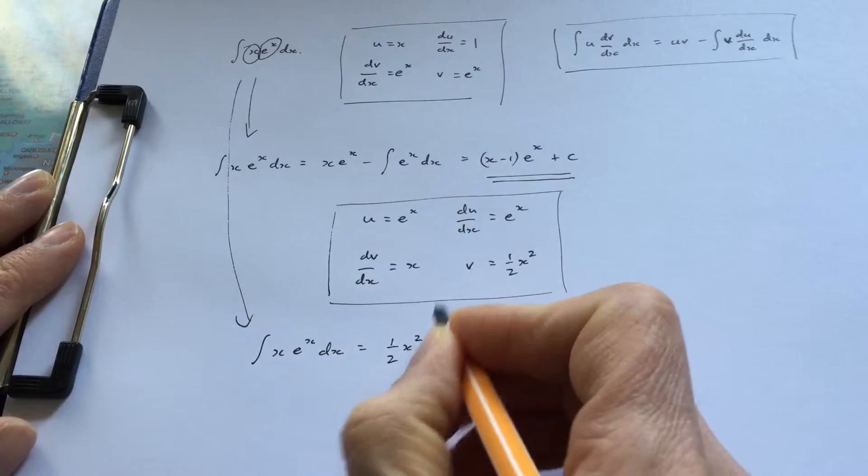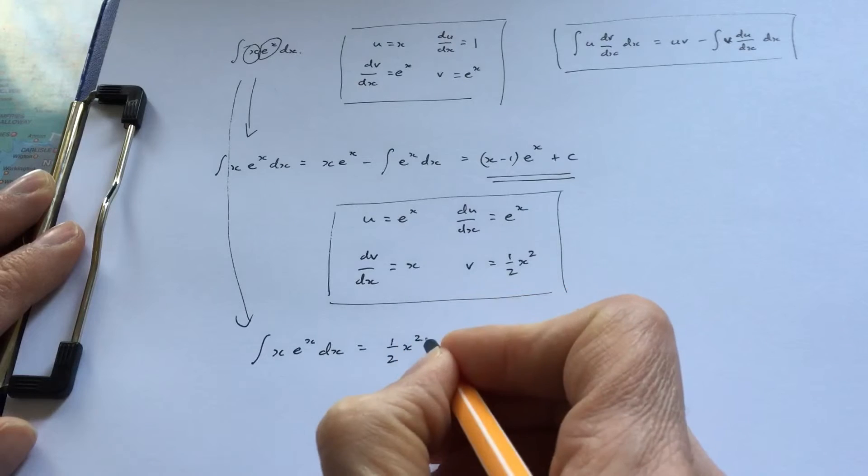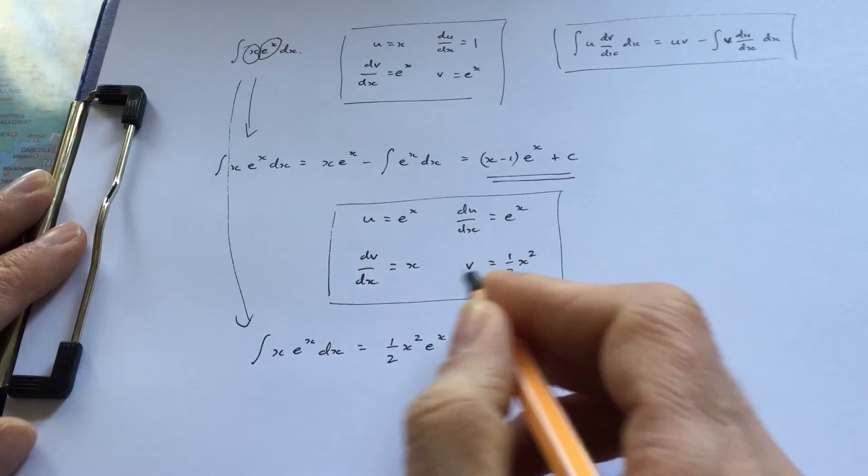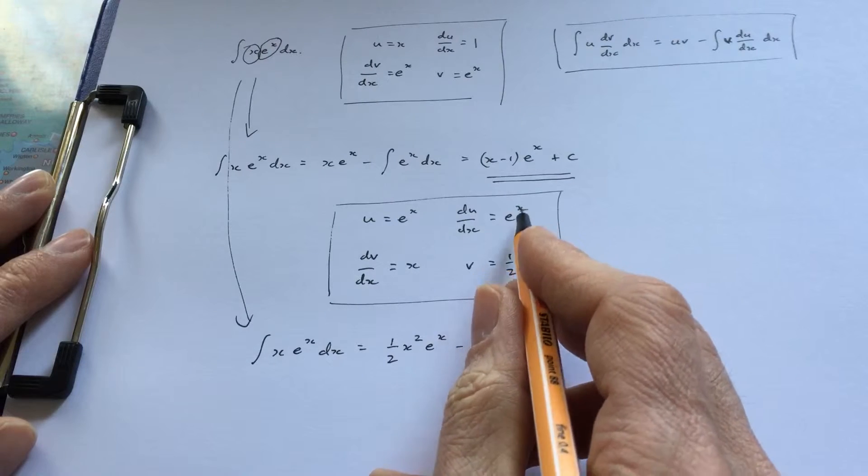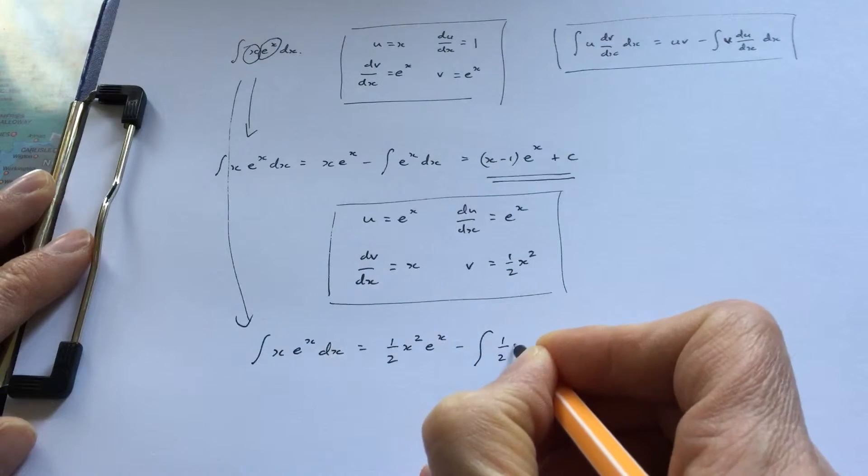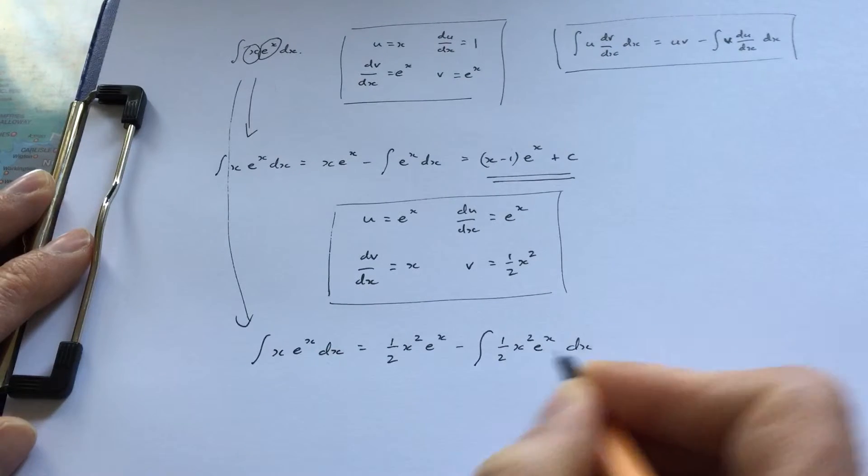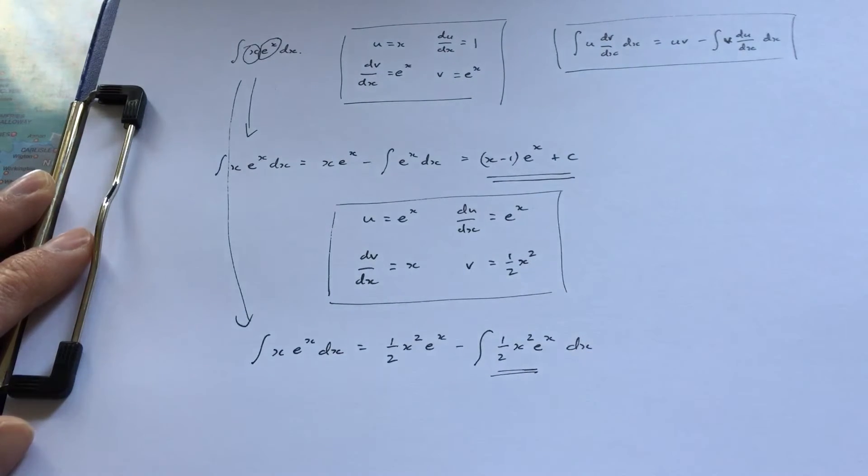It's getting more complicated. I've got ½x² e^x minus the integral of v du/dx. So I've got ½x² e^x, and the problem is I can't integrate that.